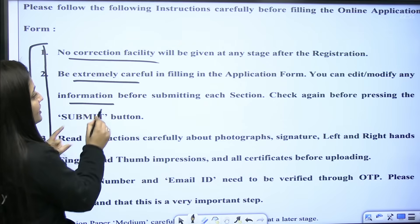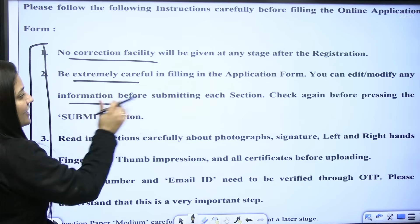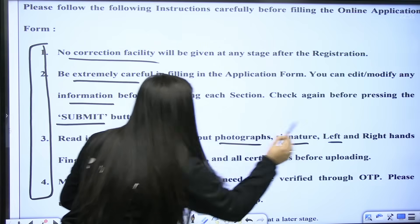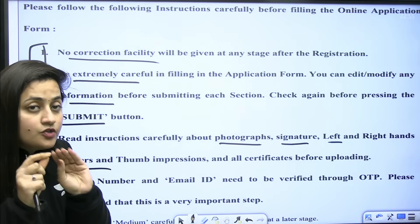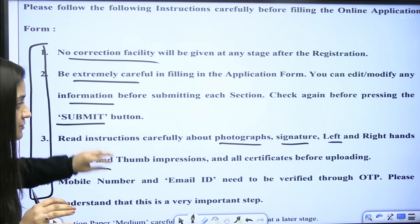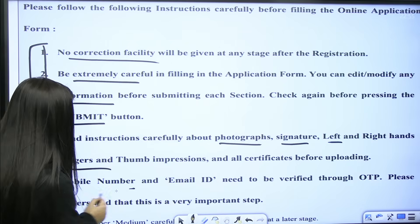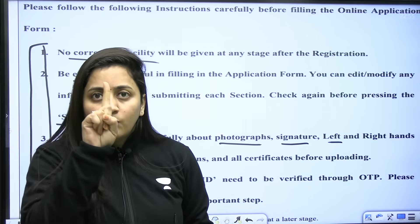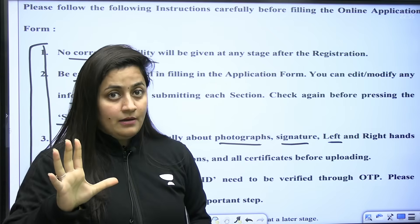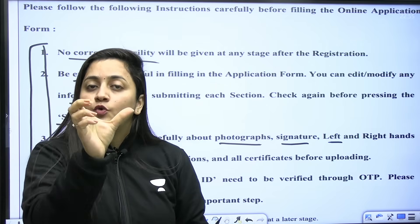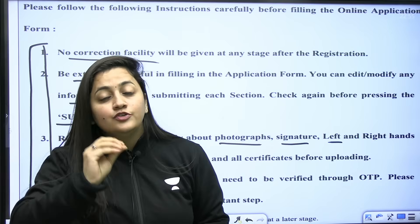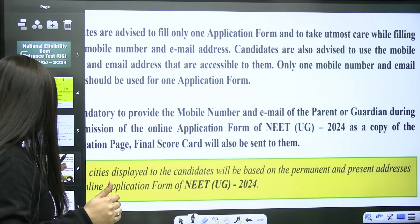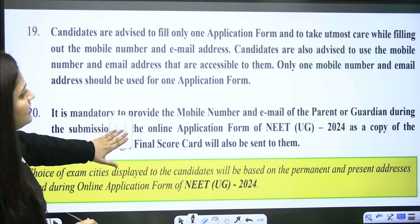You can edit information before submitting each section — check again before pressing submit. Read instructions carefully about photograph, signature, left and right fingers and thumb impression. There should be no mistake in the thumb impression. The mobile number and email ID need to be verified through OTP, so you should have one working mobile number — yours or your parents' — and always remember the password of that email ID as further communication will be done through it.